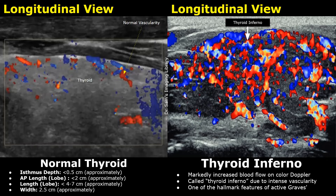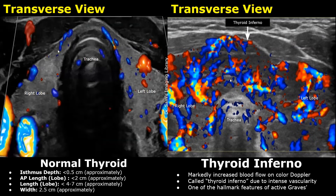Thyroid inferno refers to significantly increased vascularity on color Doppler. These are longitudinal views showing the thyroid gland. Normally, we will not see many color Doppler signals in the thyroid gland. But in Graves' disease, in a thyroid inferno, we see lots of color Doppler signals in the gland. This image shows the normal blood flow in the thyroid in transverse plane. The thyroid inferno refers to the intense vascularity in the thyroid on color Doppler. The thyroid appears enlarged and seems to have a hypoechoic and heterogeneous echo texture.